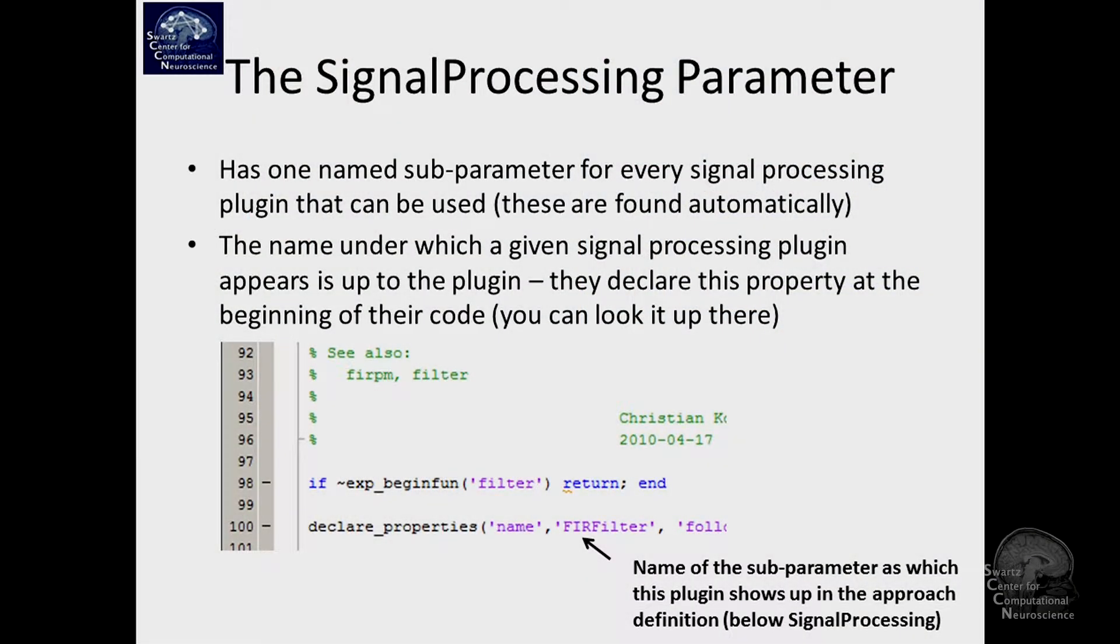The signal processing parameter of a paradigm lists several subparameters as I said, and these have some names such as FIR filter. There's a place where these names are specified, and that's right in the plugin. The specific FIR filter function, here's an excerpt of that, defines it as a property. Sometimes it may not be exactly clear: in the GUI you see FIR filter, aha this is what I'm typing in, where's the function for that?